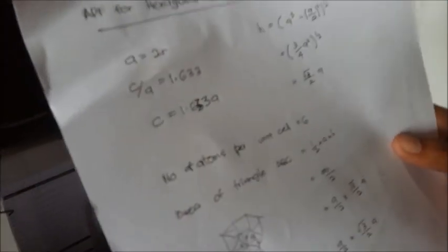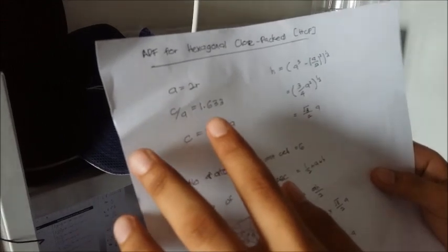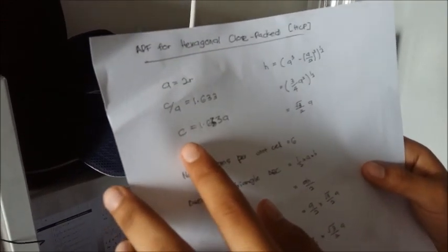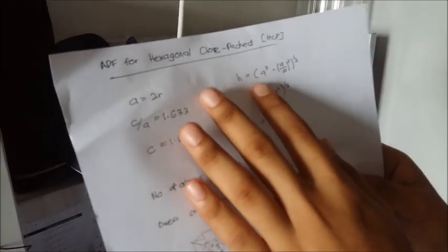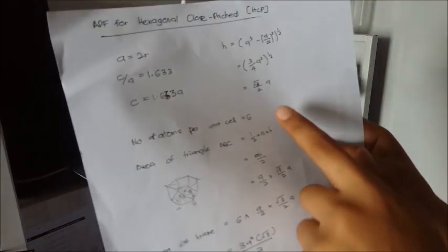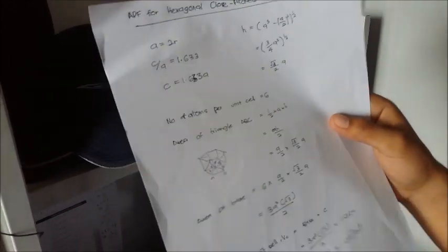Then I will continue with the APF for hexagonal close-packed structure. First, for HCP, a equals 2r, and c equals 1.633a. The height h equals a√3 over 2. Then we have to know the number of atoms per unit cell, which is 6.